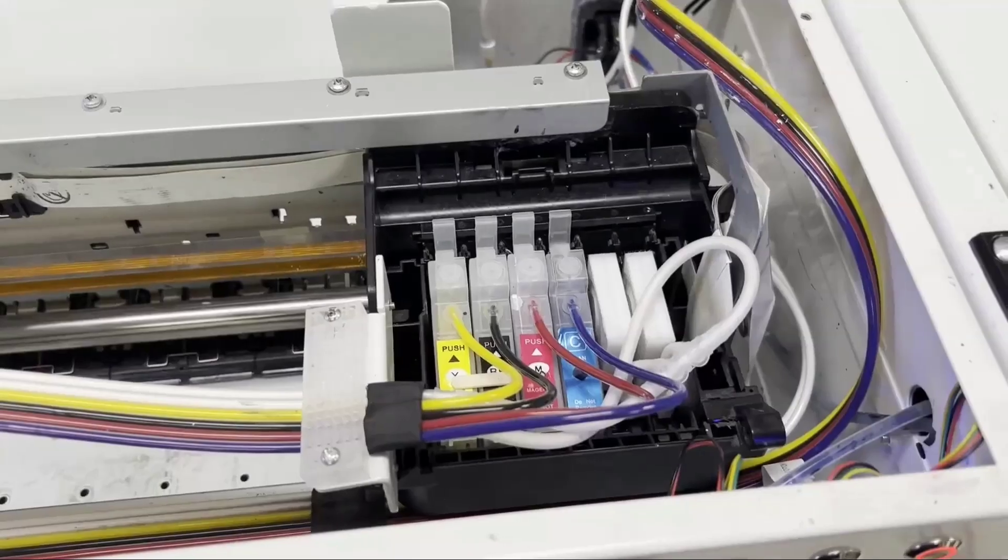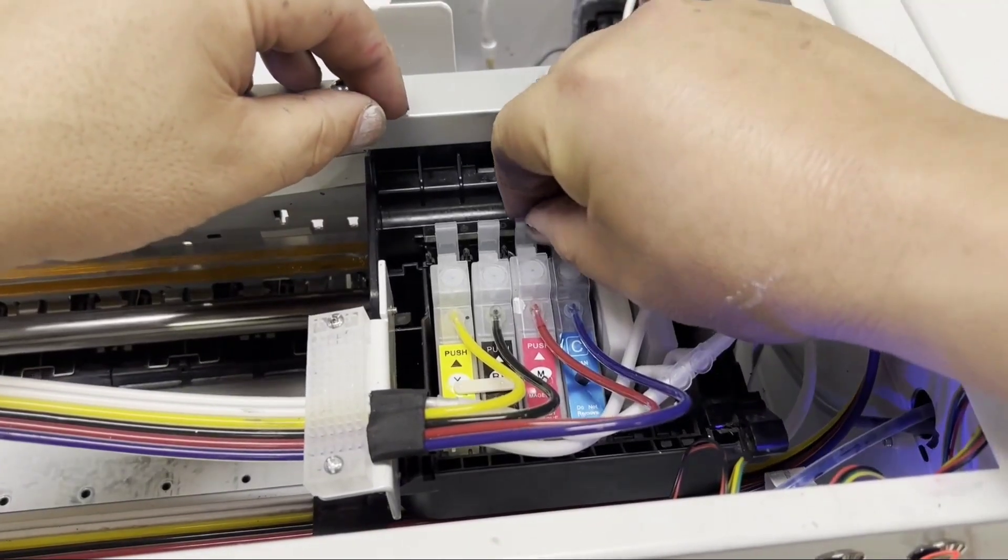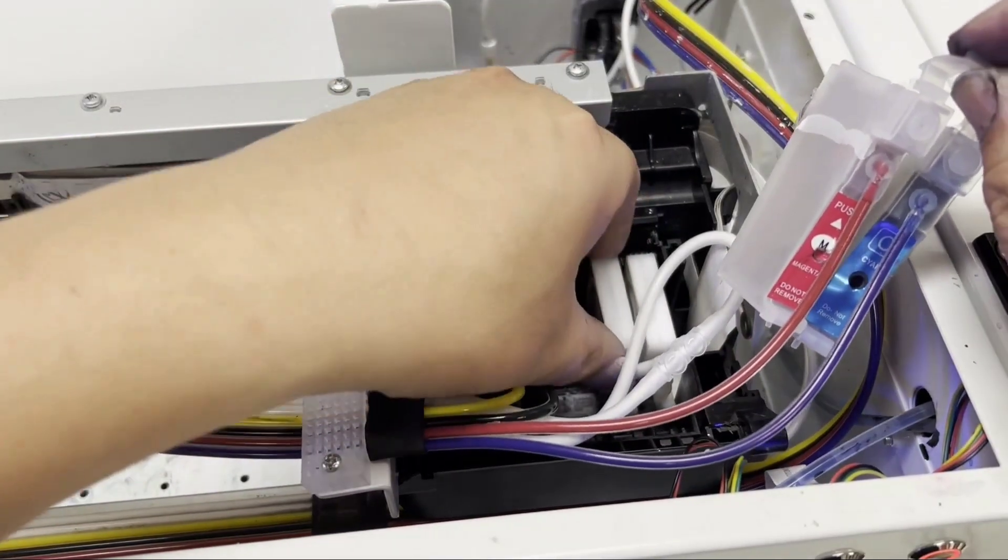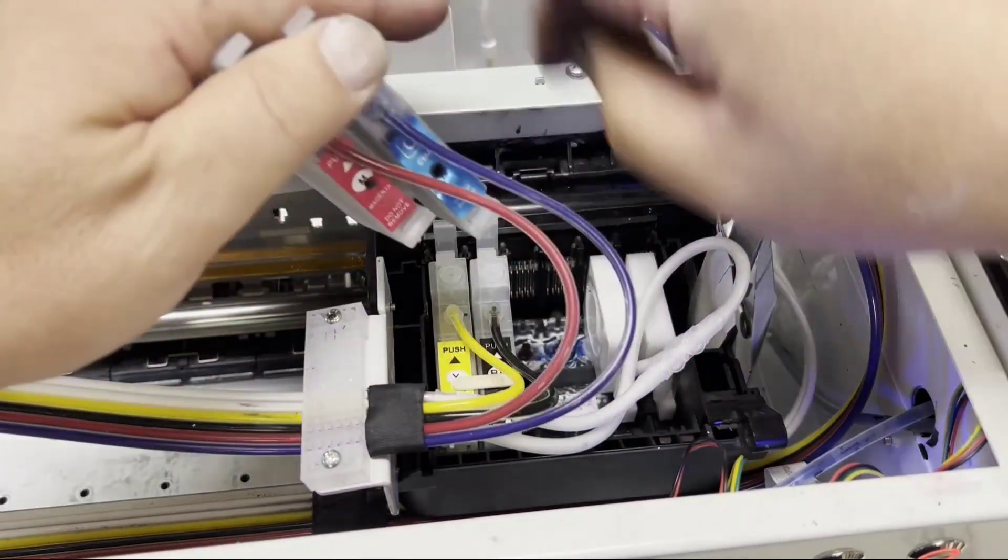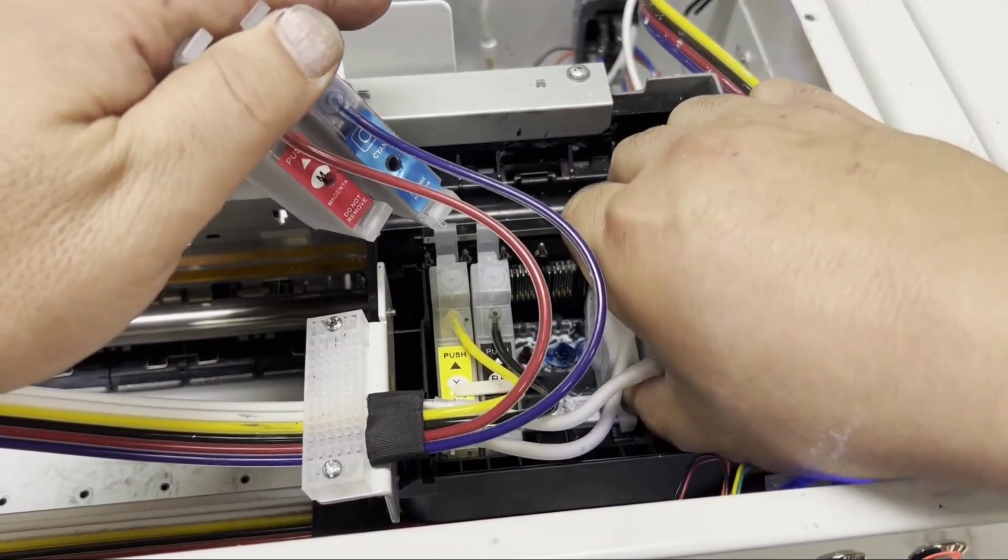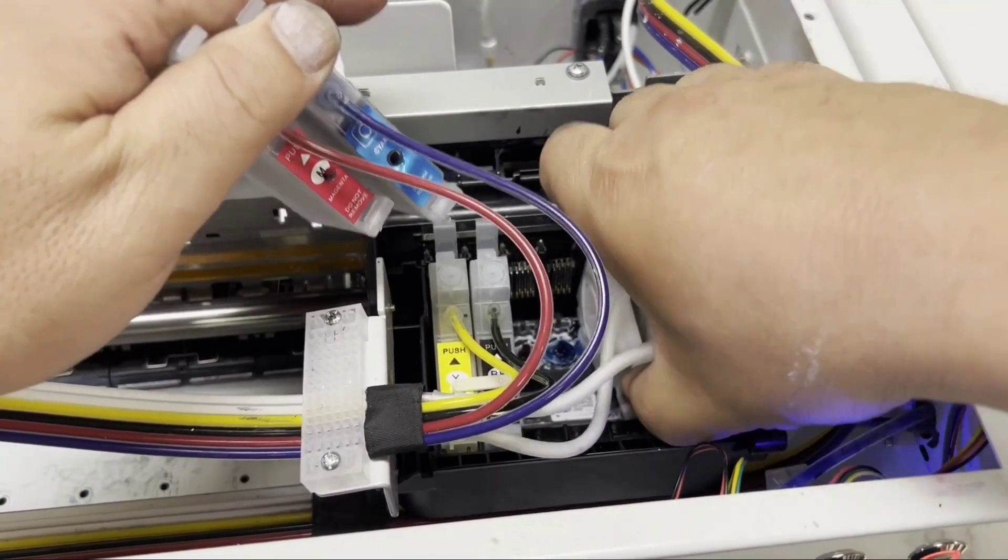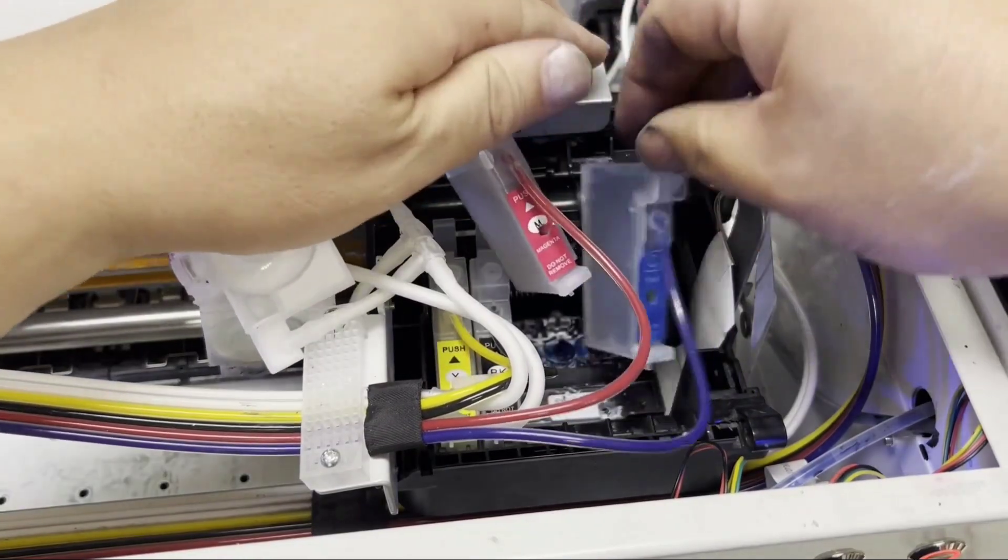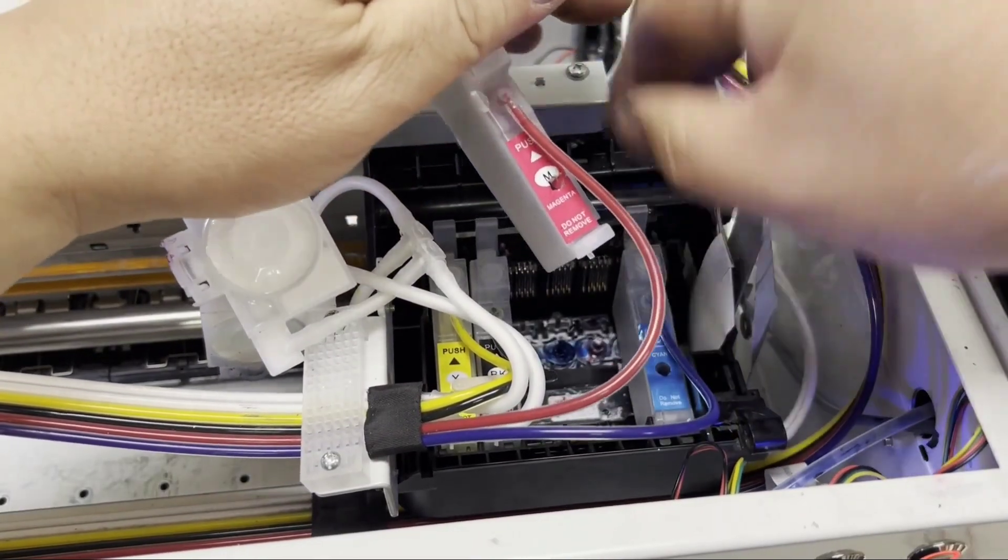We're going to take two color dampers out and we're going to take the white dampers out. We're going to put the color damper in the white damper slot. For the white damper, we take it out. We're going to put it in a Ziploc bag. Oh, I forgot to say we're shutting down the printer.